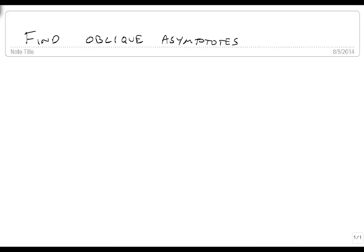Let's find oblique asymptotes. Remember that an oblique asymptote is when the degree on top is one higher than on bottom.